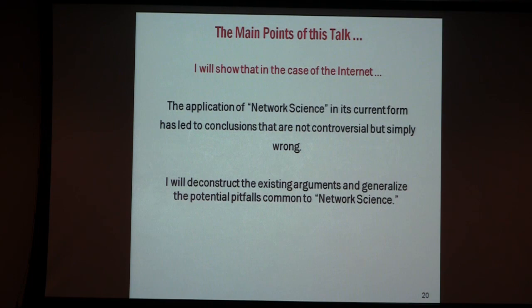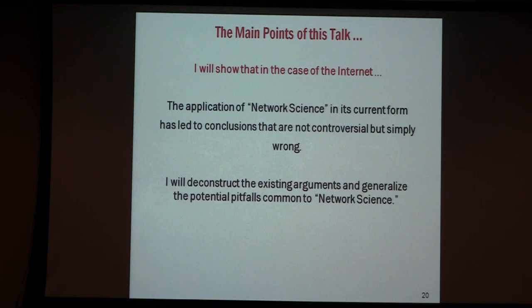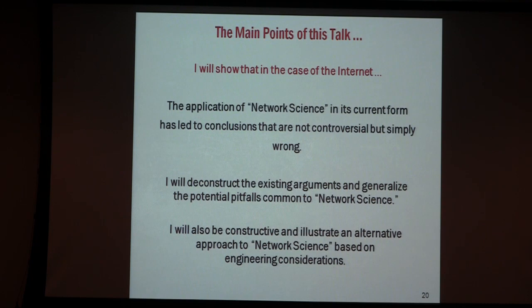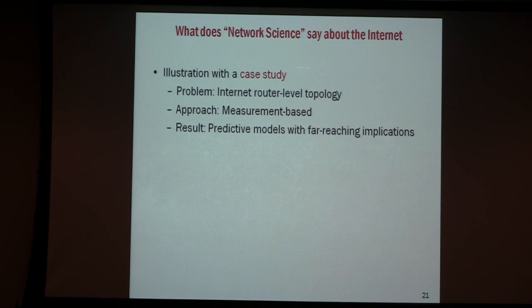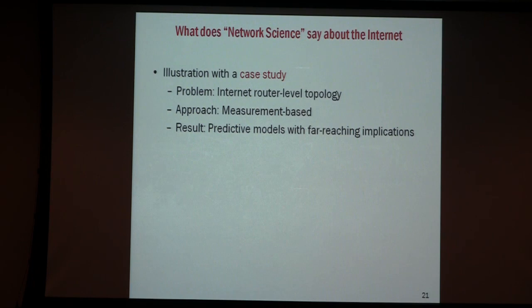There are two pieces to what I'm going to do. One, I hope to demonstrate with relatively obvious arguments why this stuff, as far as the internet is concerned, is wrong. And then, from a positive standpoint, does it suggest ways that we haven't been thinking about before that actually gets us closer to where we want to be? The concrete problem we are looking at is internet router-level topology. As in many pieces of work in network science, it is measurement-driven — somebody has data about this aspect of the internet, people take the data, make inferences, make models.